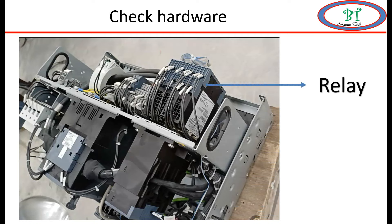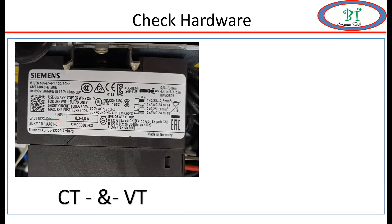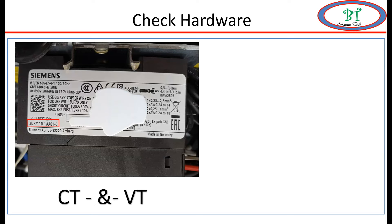Now we will see this module. This is the SIMACODE relay, this is the CT — the power cable will go through it — and this also has the option for VT connection. We can see deeply on this hardware part, which is highly necessary for configuration. On the CT, on the edge, it will have nameplate details. We have to note the part number. The part number for the CT is 3UF7110-1WA01-0. Like this, we have to note all part numbers, which will be very useful at the time of configuration for the SIMACODE relay.